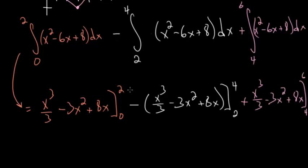Now, actually plugging in these bounds, when we plug in 0, each of these terms just go away. So we just need to focus when we plug in 2. Plugging in 2 here, we get 8 over 3 minus 3 times 4, which is 12, plus 8 times 2, which is 16.